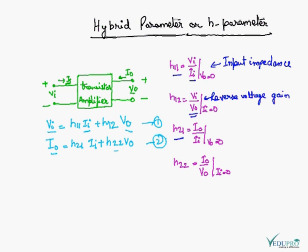H21 is given by Iout upon Iin input current, keeping Vout zero. It is forward current transfer. So this is current gain.